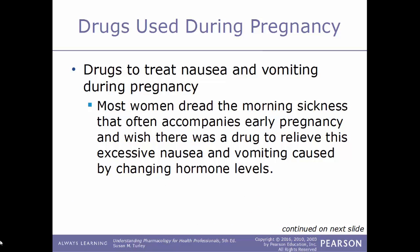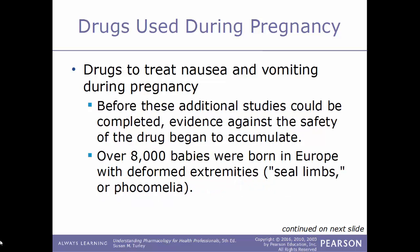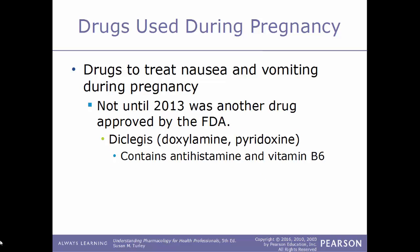Drugs used to treat nausea and vomiting during pregnancy address the morning sickness that often accompanies early pregnancy. In the late 1950s, thalidomide was developed in West Germany and used extensively to treat morning sickness, but the FDA refused to approve it in the United States. Before additional studies could be completed, evidence against its safety accumulated, and over 8,000 babies were born in Europe with deformed extremities resembling seal limbs. Not until 2013 was another drug approved — Diclegis, a combination of doxylamine and pyridoxine, containing both an antihistamine and vitamin B6.